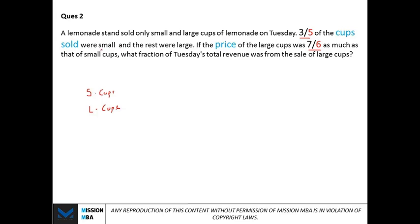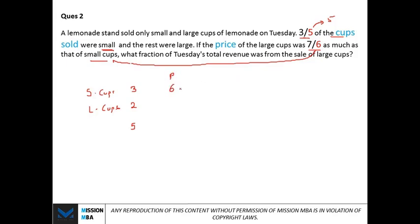Assume the total number of cups as five. Three-fifths of five is three — so three small cups and two large cups. The price of large cups is seven-sixths of small cups, so assume the small cup price is six. That makes the large cup price seven. Revenue from small cups: three times six equals eighteen. Revenue from large cups: two times seven equals fourteen. Total revenue: thirty-two. Fraction from large cups: fourteen over thirty-two.